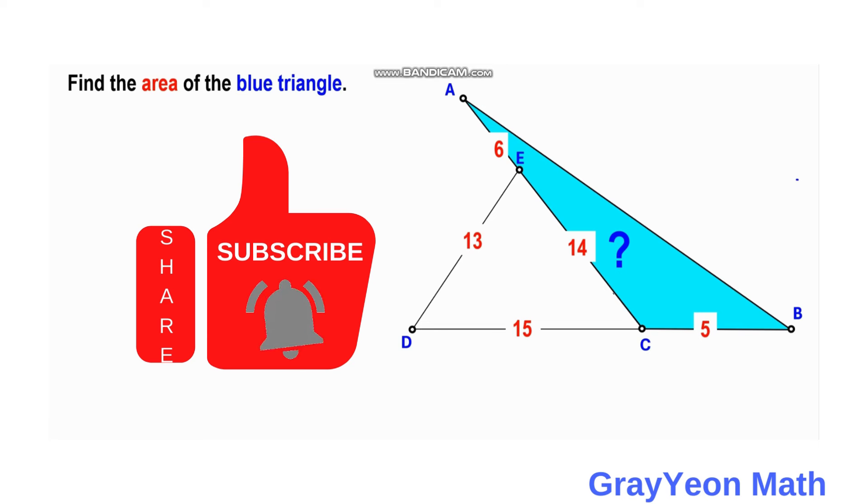Welcome to GrayonMath. We are asked to solve this problem. We have these two triangles laid down side by side, and the length of the given segments are as follows: AE is 6, EC is 14, DE is 13, ZD is 15, and BC is 5. We are required to find the area of this blue triangle.